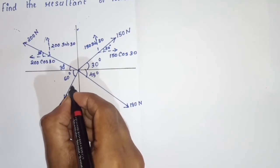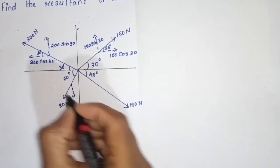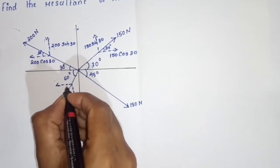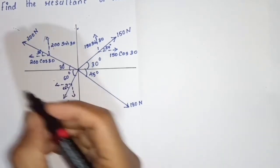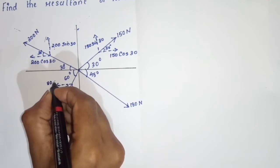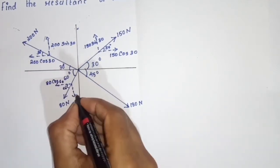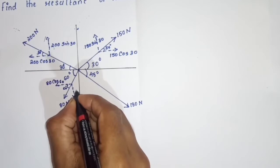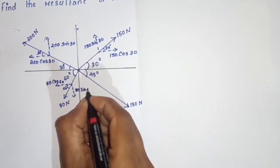Now 80N. The angle is 60 degrees. The horizontal component is 80 cos 60, and the vertical component is 80 sin 60.